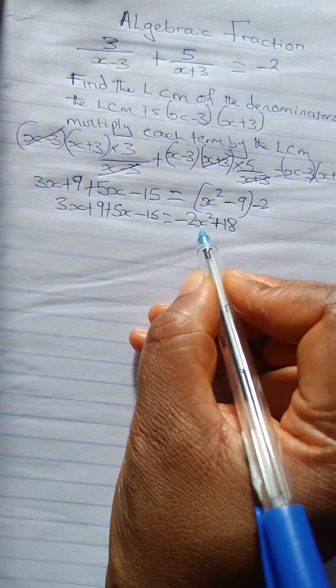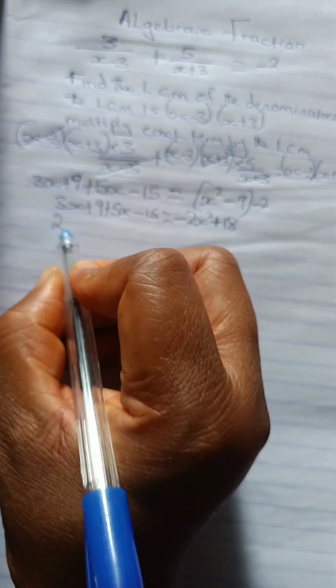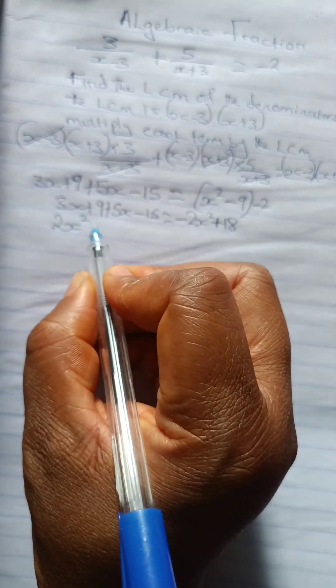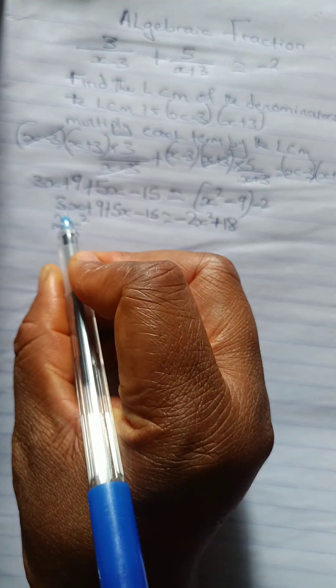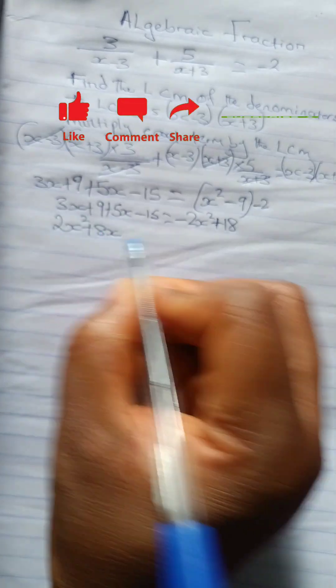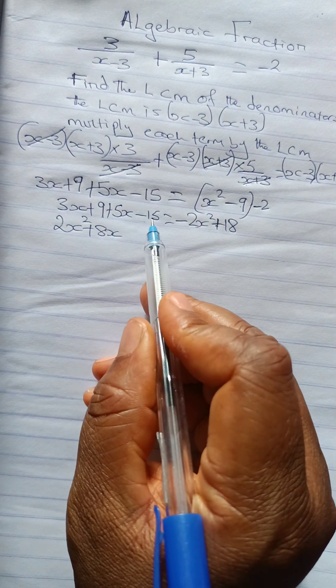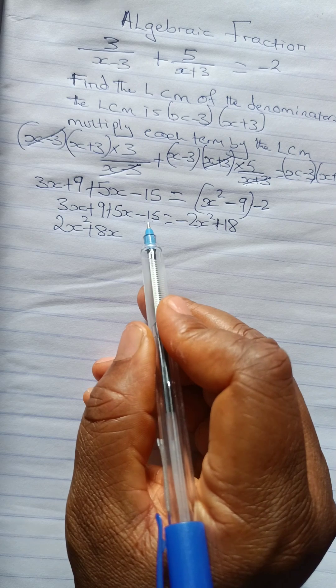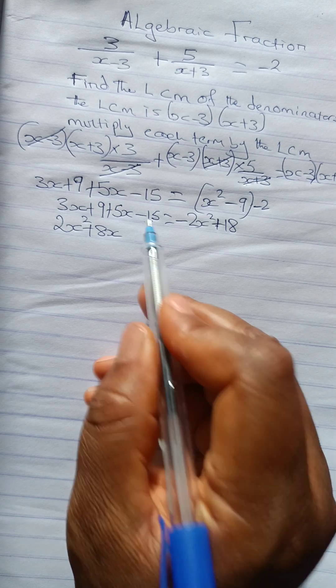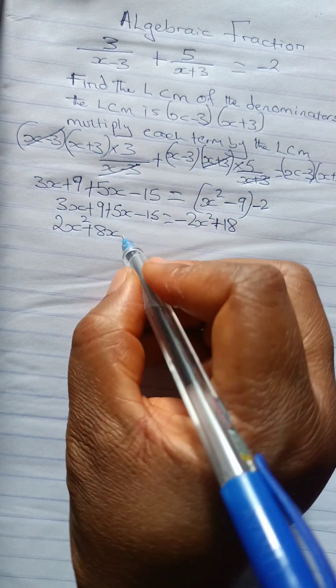So now since we have this, let's collect like terms. Of course we'll bring this minus 2x squared this way. It becomes 2x squared. No longer minus 2x squared. So 2x squared. And then 3x plus 5x is 8x. Now plus 9 minus 15 is what? Plus 9 minus 15 is minus 6. Now minus 6, this crossing over, minus 6 minus 18 will be minus 24.